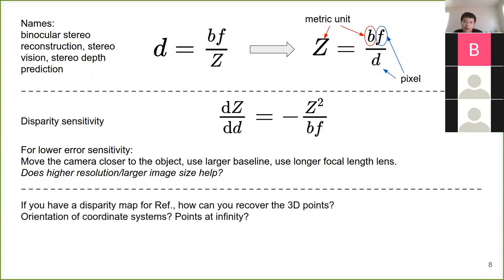If you have a disparity map for the reference image, how can you recover the 3D points? What coordinate system are you going to use, and how can you handle points at infinity? These are practical issues we have to consider in real world applications. The fundamental question is: how to find per-pixel correspondence and how hard can that be?